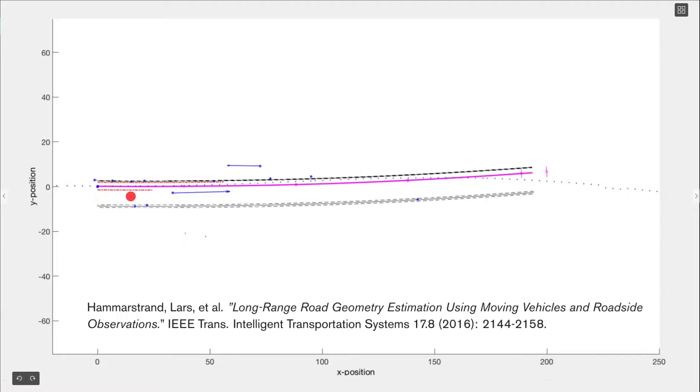Now, from the camera, we get information about the shape of the lane markings of the current lane. These are shown here as red dashed lines. Typically, the camera is able to detect the lane markings up to roughly 50 to 60 meters, but sometimes shorter. The length of these lines indicate how far ahead the lane geometry from the camera is valid.